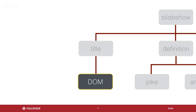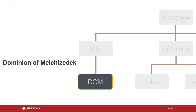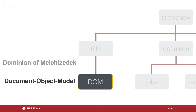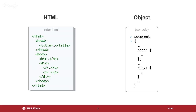So when we talk about the DOM, what is the DOM? The DOM is the Document Object Model. How does it end up getting created? Well, when we use a web browser, a web browser is taking an HTML page and displaying that HTML page.